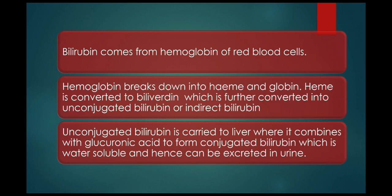Bilirubin comes from hemoglobin of red blood cells. Hemoglobin breaks down into heme and globin. Heme is converted to biliverdin, which is further converted into unconjugated bilirubin or indirect bilirubin. Unconjugated bilirubin is carried to the liver where it combines with glucuronic acid to form conjugated bilirubin.